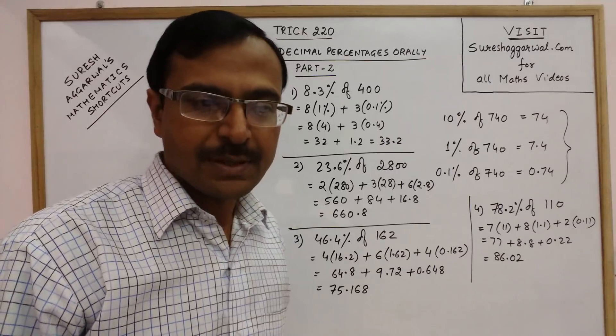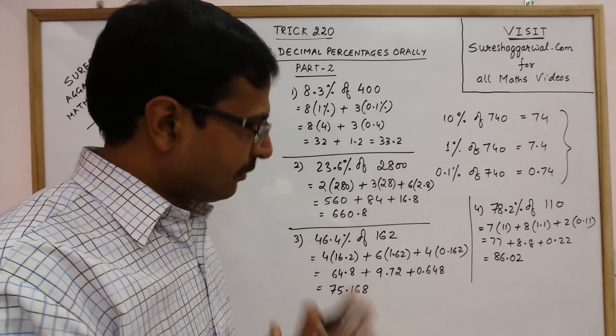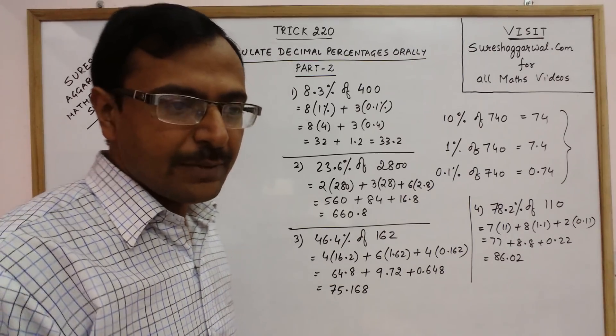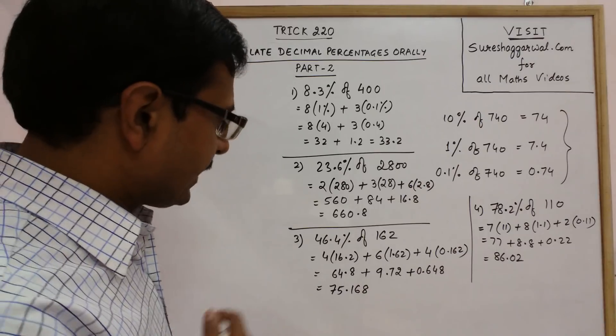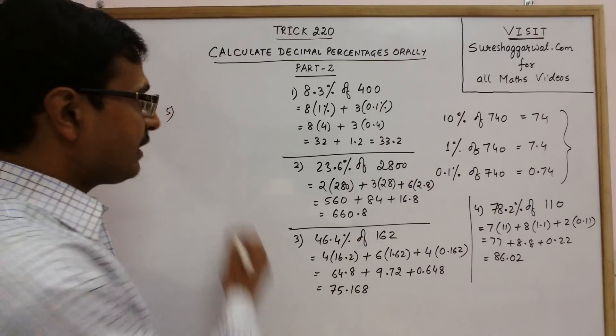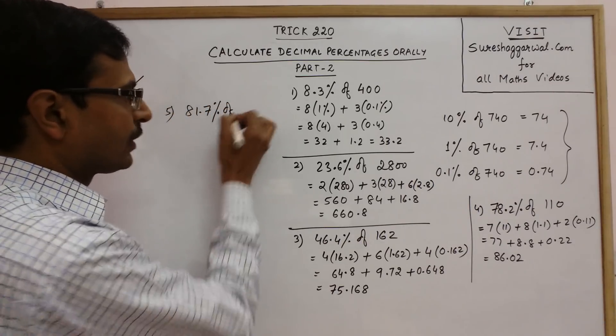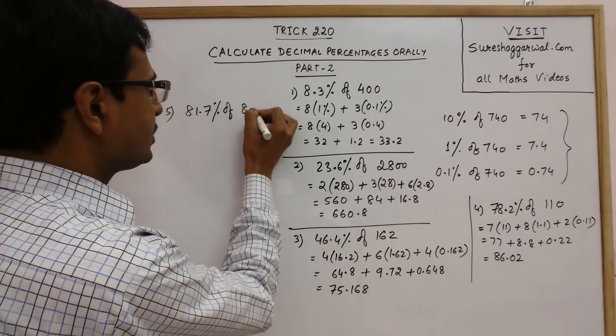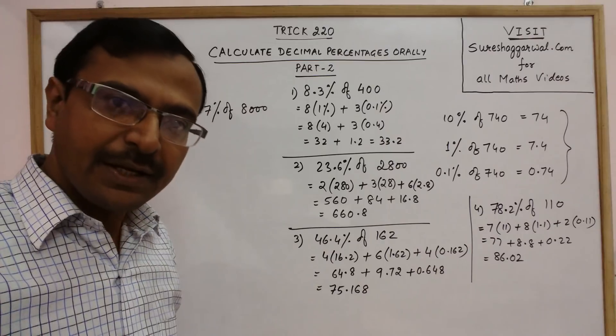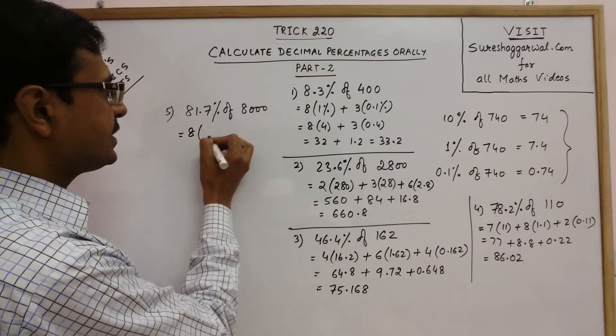If you want I can solve one more example. Say we will then conclude this trick. I think you would have gained an insight into the percentages and how we can calculate these percentages orally. Now say I am taking an example of, so this is question. Now this is 81.7% of the number which I am taking is 8000. See 81.7% is 80 plus 1. So 80 means 8 into 10, 10% is 800.